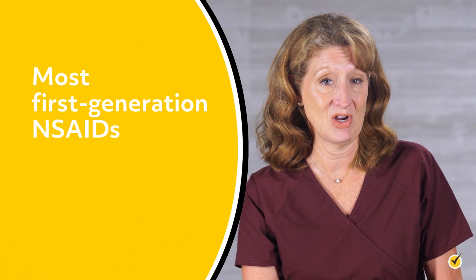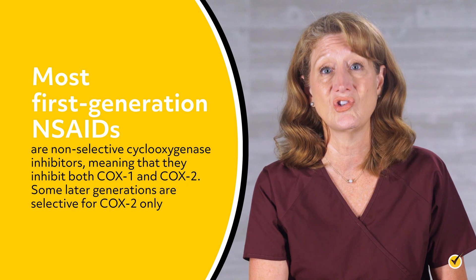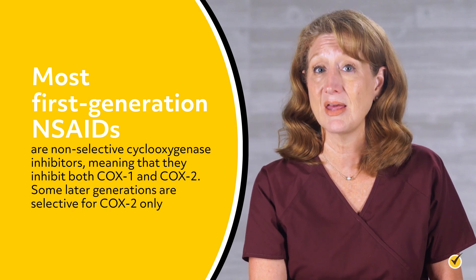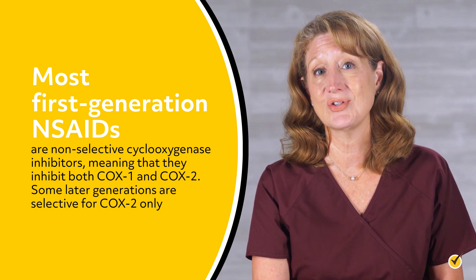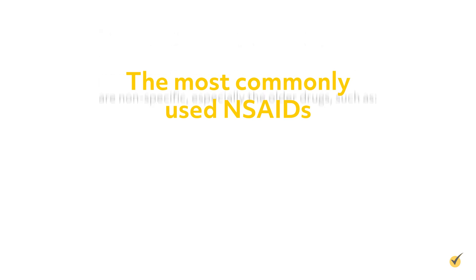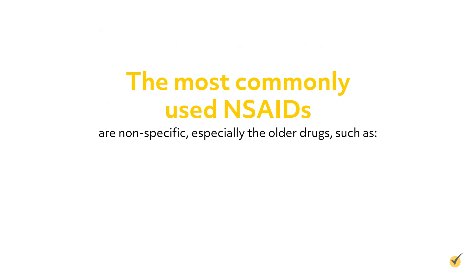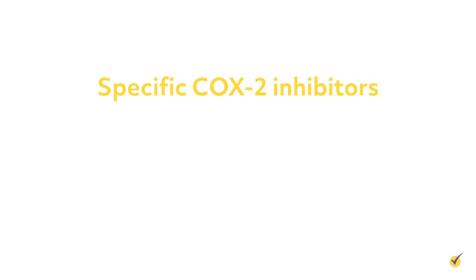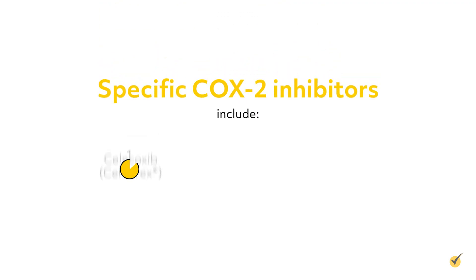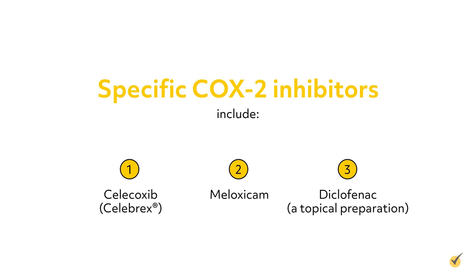Most first-generation NSAIDs are non-selective cyclooxygenase inhibitors, meaning that they inhibit both COX-1 and COX-2. Some later generations are selective for COX-2 only. The most commonly used NSAIDs are nonspecific, especially older drugs such as ibuprofen, naproxen, and indomethacin. Specific COX-2 inhibitors include celecoxib, or Celebrex, meloxicam, and diclofenac, a topical preparation.